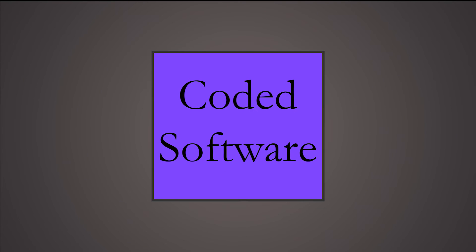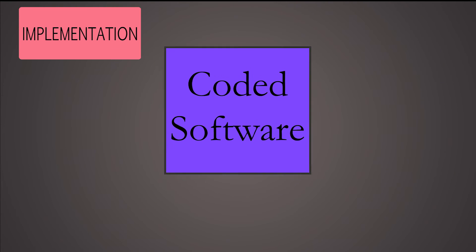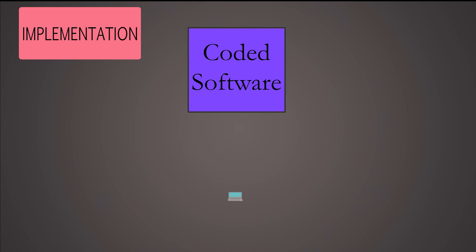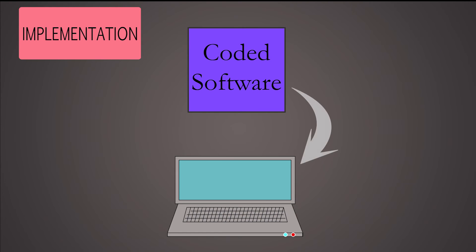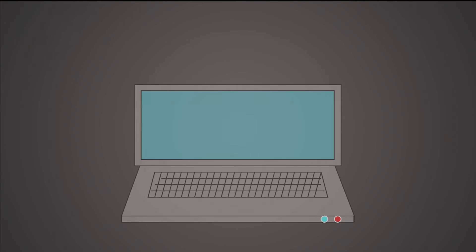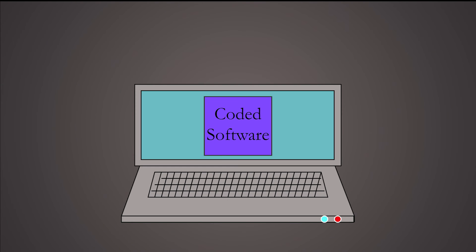Now you have a running program which seems to work as it should. The next step is to make sure the software product is correctly implemented. In simple cases, this means making the software available to be installed on users' machines. After a complete software product is on the market, the last stage is maintenance.